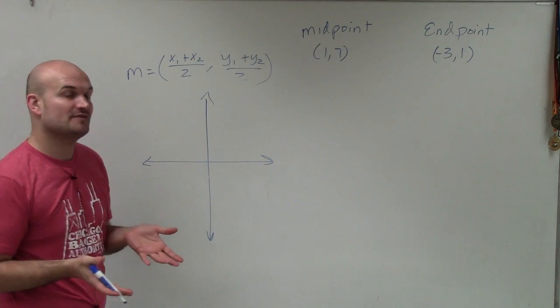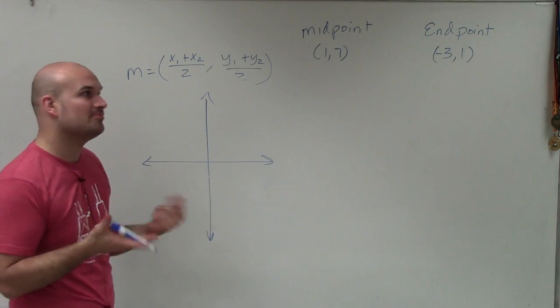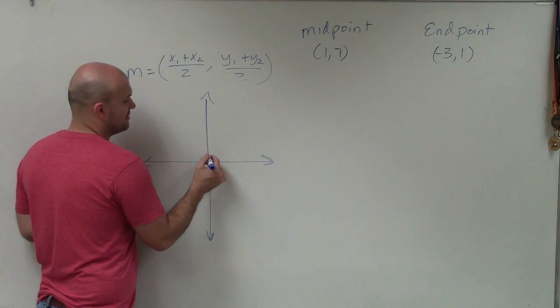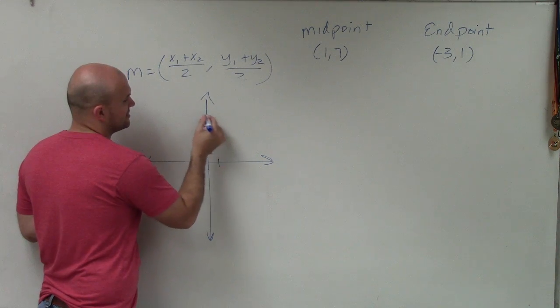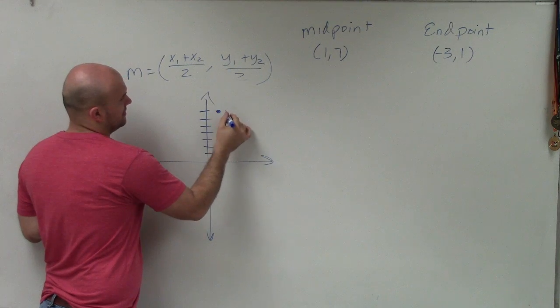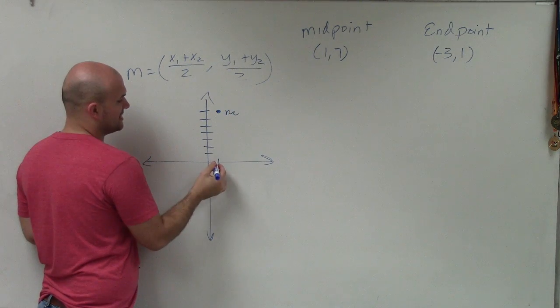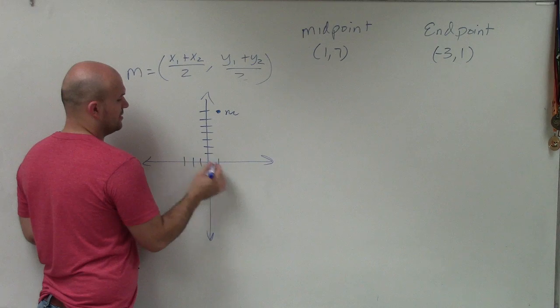So I'm going to go back to solve this problem. And to explain it, I'm going to again plot the points. So I have my midpoint at 1, 7. 1, 2, 3, 4, 5, 6, 7. That's my midpoint. And my endpoint is at negative 3, comma 1. 1, 2, 3, comma 1.